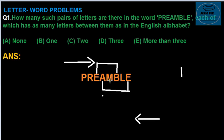Next, going forward: M, N, O, P, Q, A, B, C, D — nothing. E: M, N, O, P, Q, A, B, C, D, E. So here the answer will be 2 — one pair here and a second pair here. So the answer is 2.